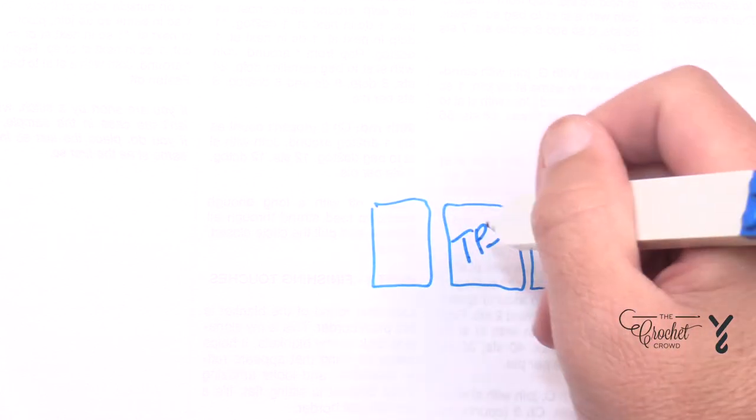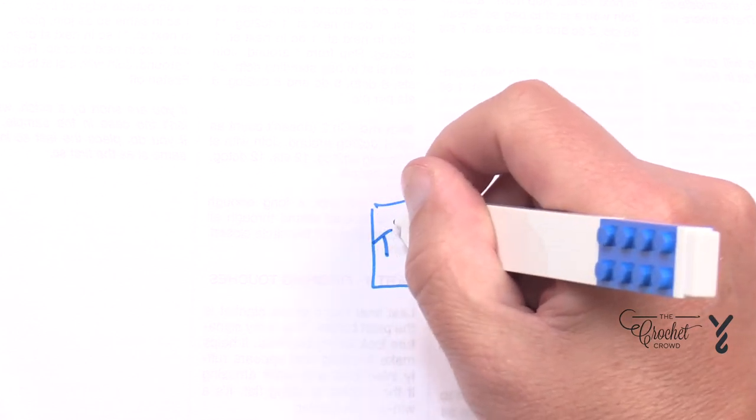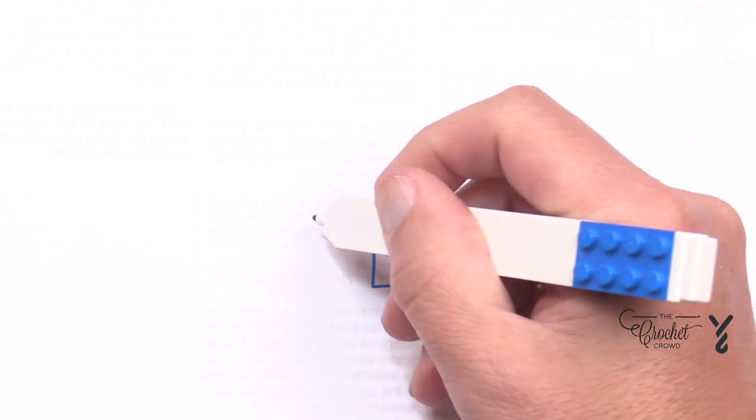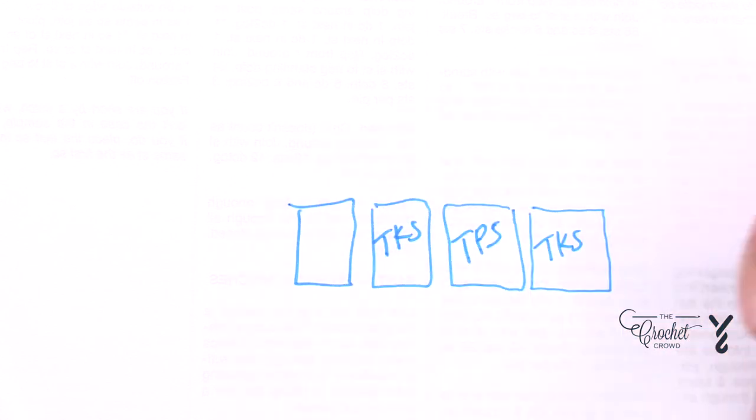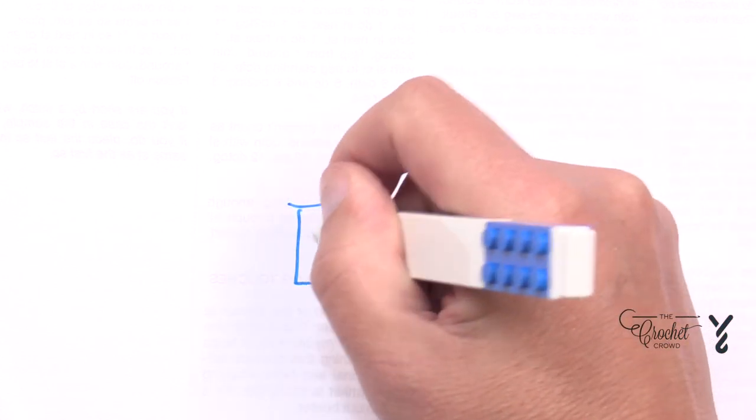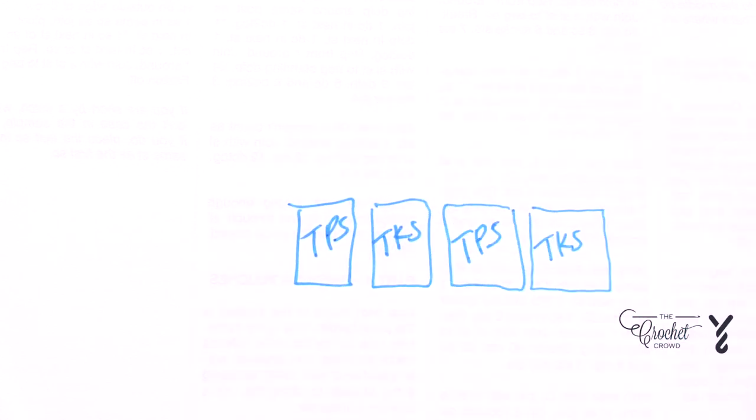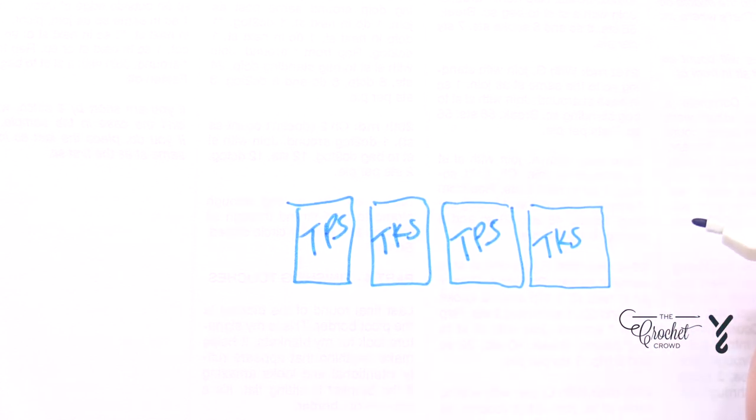So if that was that, then the next box has to return back to TKS and then the next box would have to turn back to TPS. So you can see that you have four boxes here, but what is the problem with that?